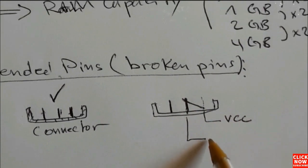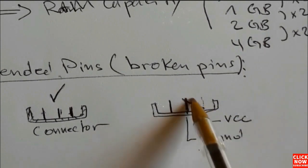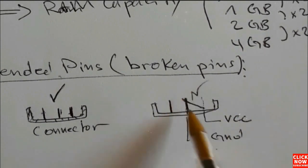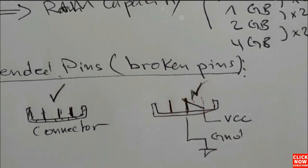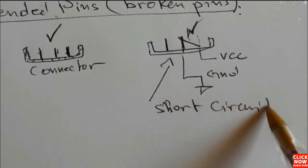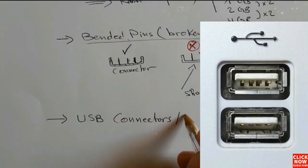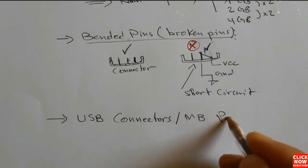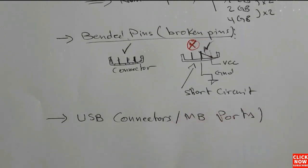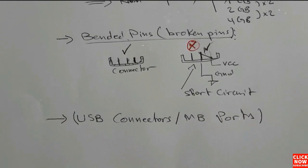For example, if the third pin is VCC and the second is ground, a bent pin touching both causes a short circuit. Always pay attention to bent pins on every motherboard. This is one of the most common faults in laptop and desktop motherboards.